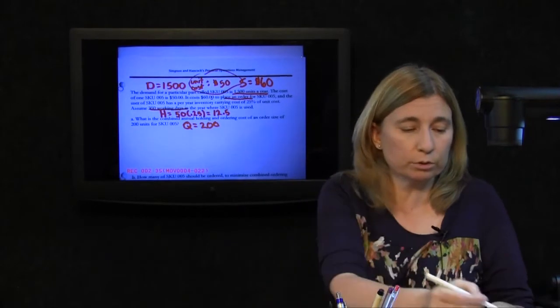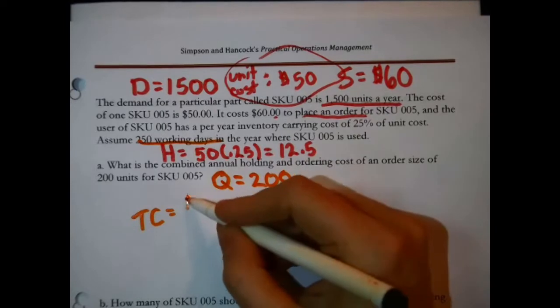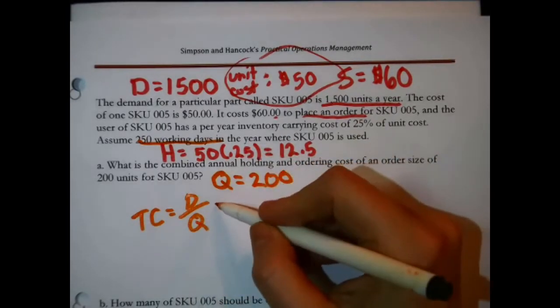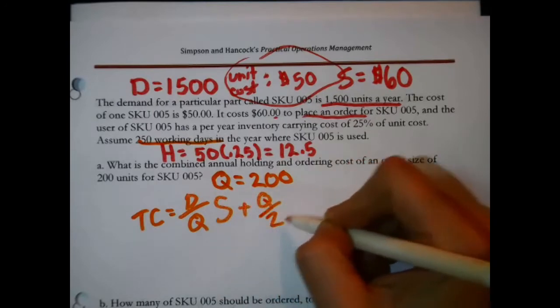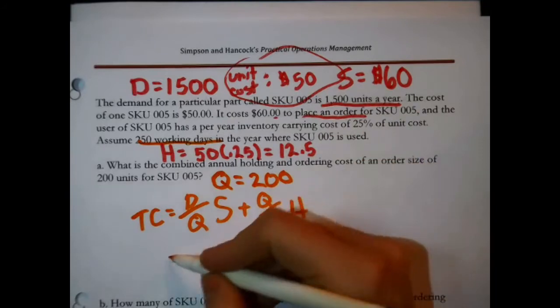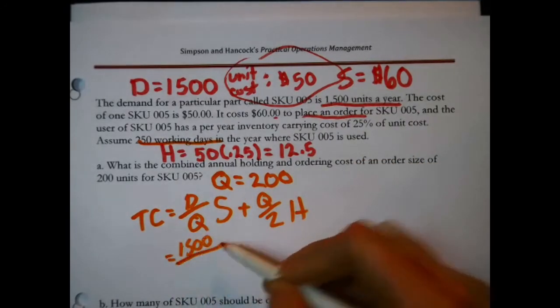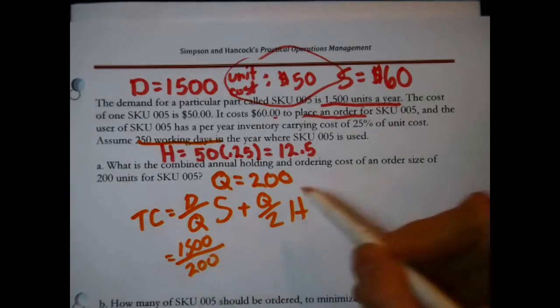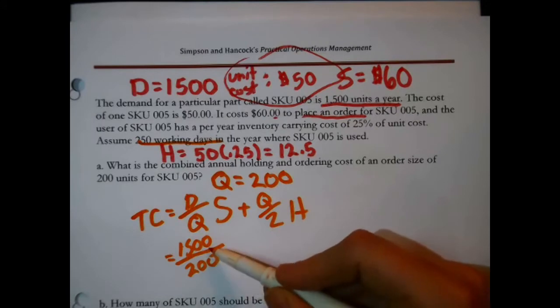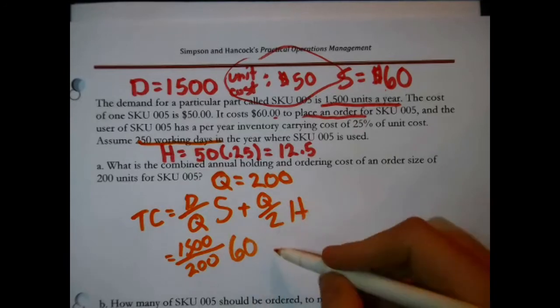We need the total cost formula. So the total relevant cost in this case would be D divided by Q, annual demand divided by the quantity, times S plus Q divided by 2 times H. We just need to fill in the formula. So in our case, that would be 1500 divided by 200, because that's what they're asking about. This would get you the number of orders a year. Multiply that times the cost per order, so that's times 60.